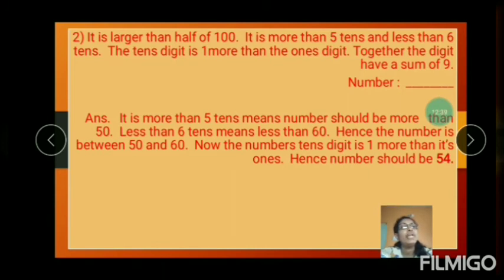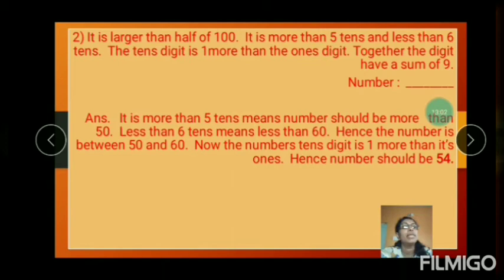More than 5 tens means the number should be more than 50. Less than 6 tens means less than 60. Hence the number is between 50 and 60. The tens digit is 1 more than the ones digit — hence the number should be 54.